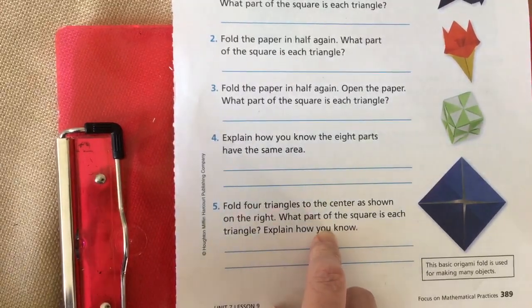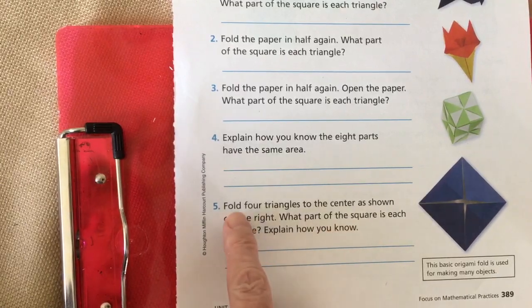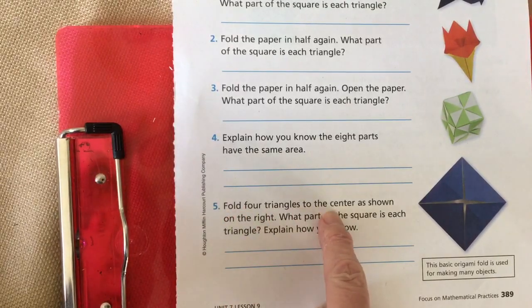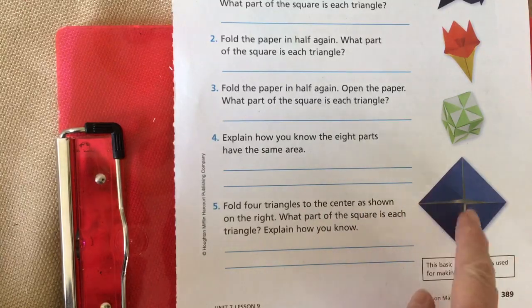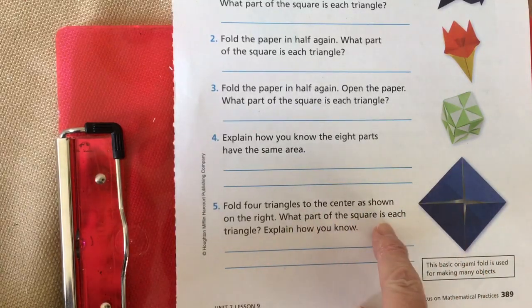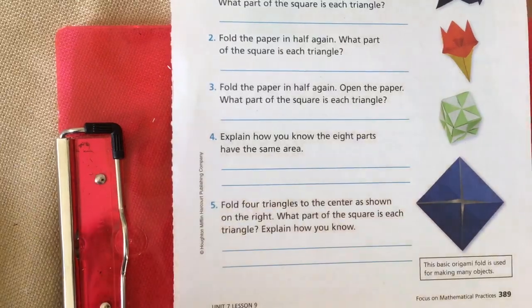I know you are critical thinkers. You can do this. Fold the four triangles to the center as shown, like this. What part of the square is each triangle?